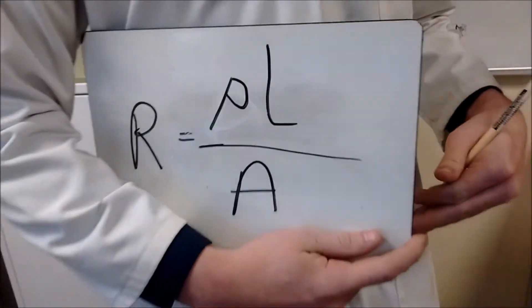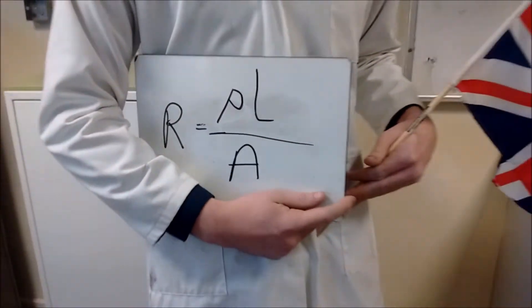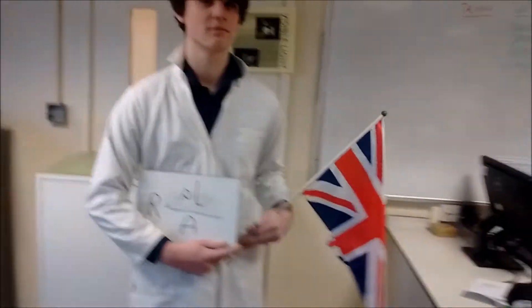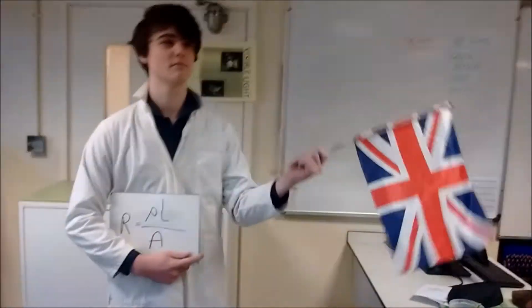A is cross-sectional area in meters squared — that's what's easy, it shouldn't leave you scared. Finally, L is length, that's simply just meters. Now you know it fully, you won't be cheaters.